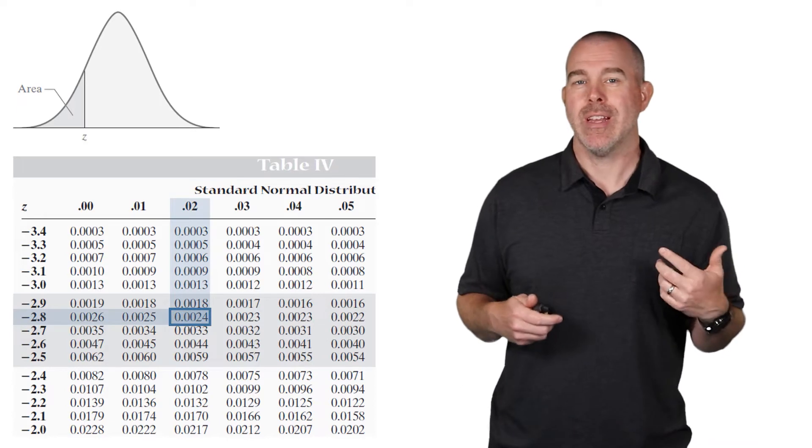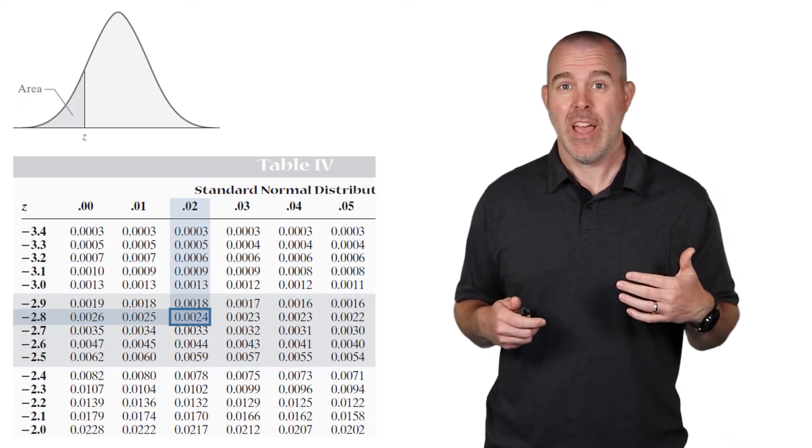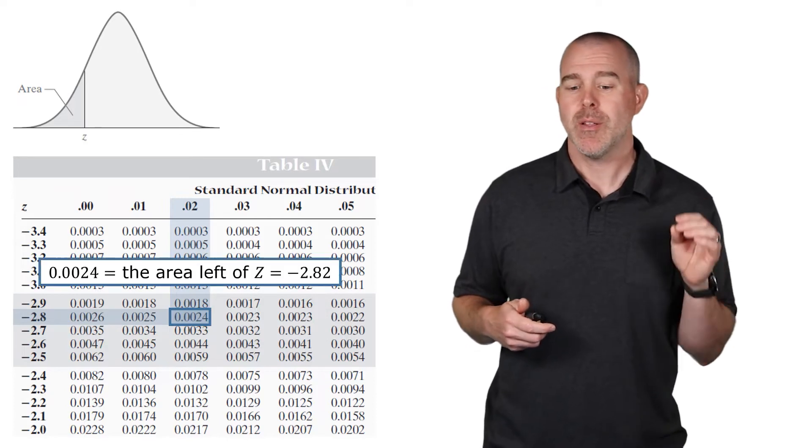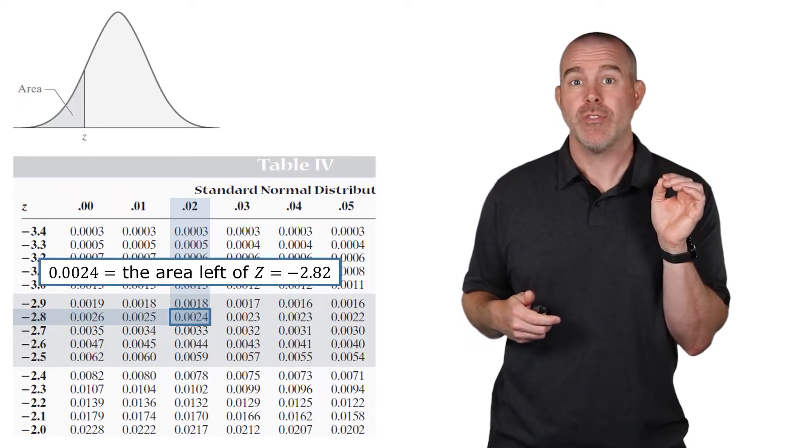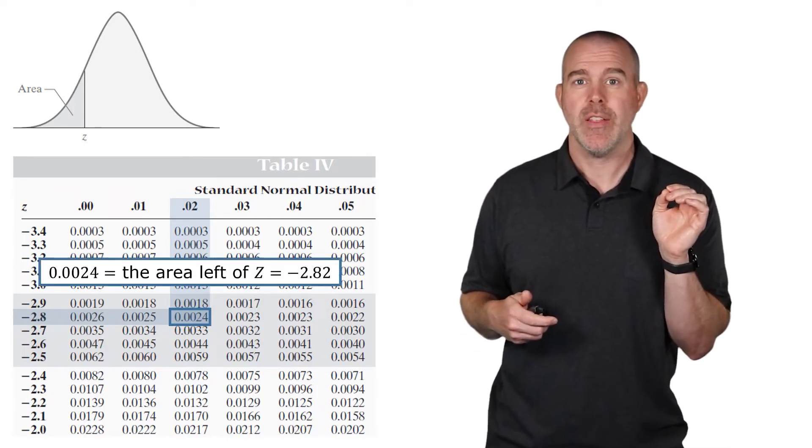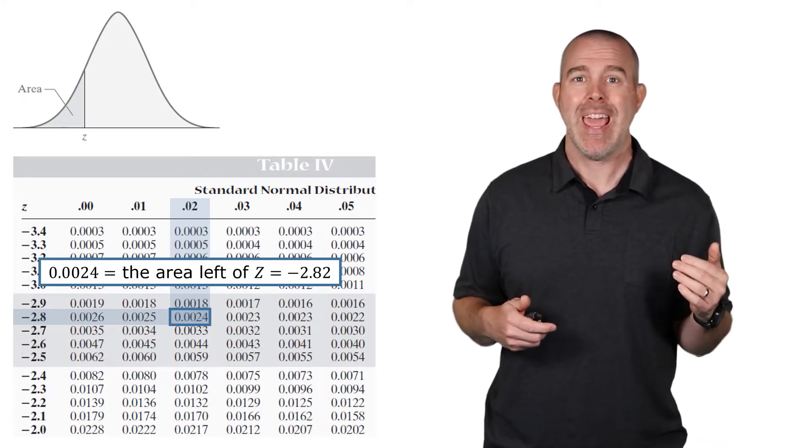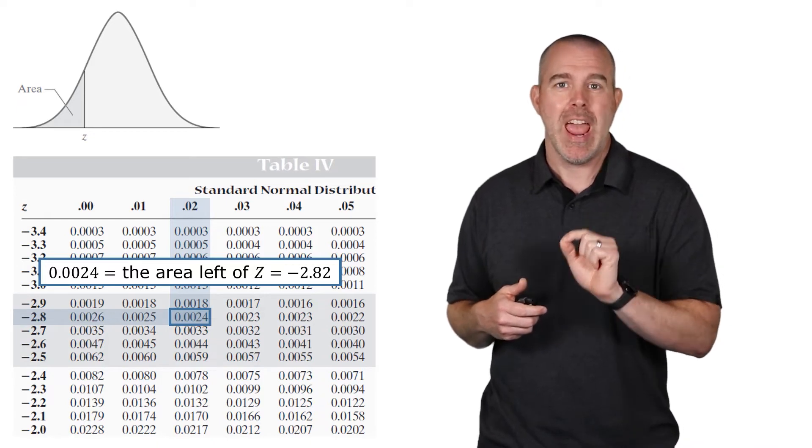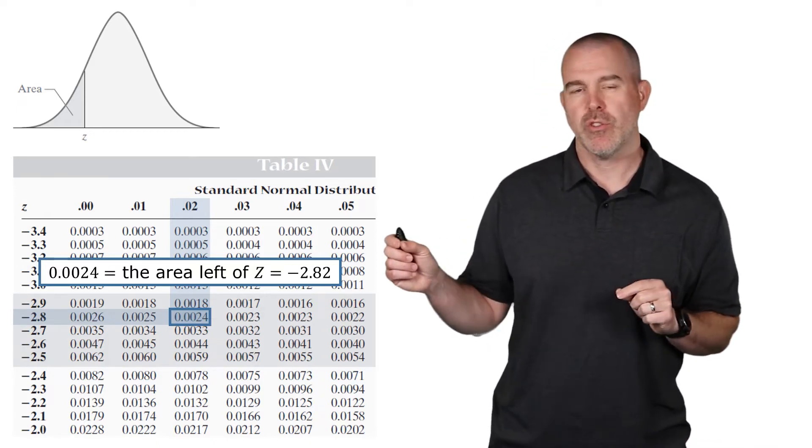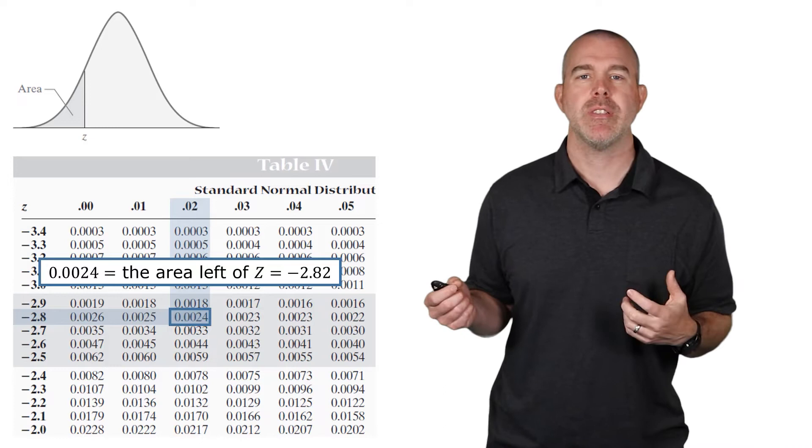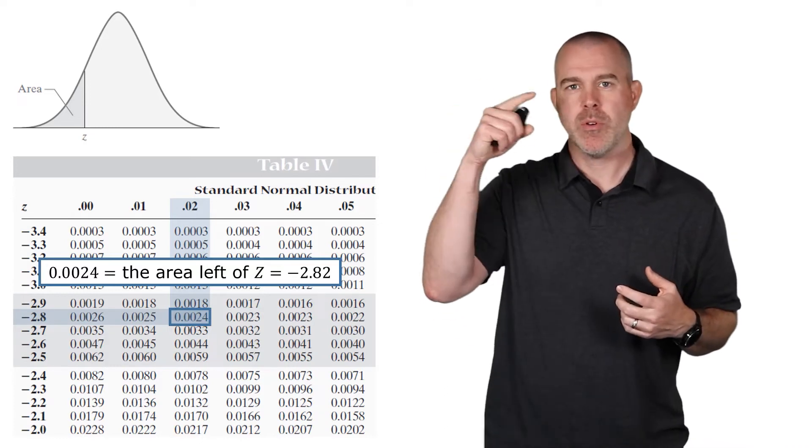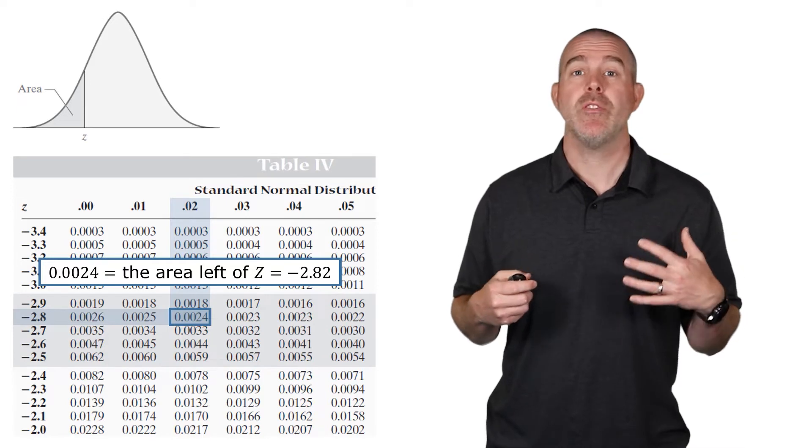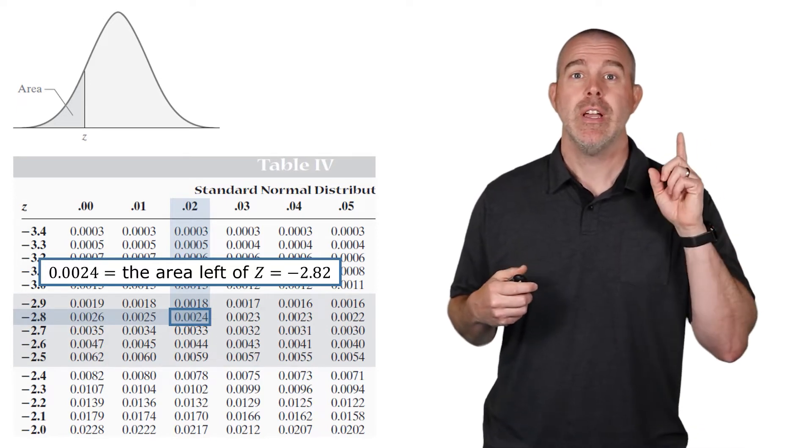If you track over to the left, and then up to the right, there's a negative 2.8. So that's to the tenths place. And then there's a 0.02 to the hundredths place. This means the probability of being to the left or the area to the left of this on the curve of negative 2.82 is 0.0024. So the number in the middle represents the area or the probability, and then you have to track the numbers along the left represent the tenths place, and then the numbers along the top represent the hundredths place. Again, my students, we're going to be using a calculator in StatCrunch. So let's do that next.